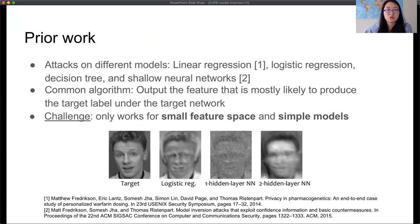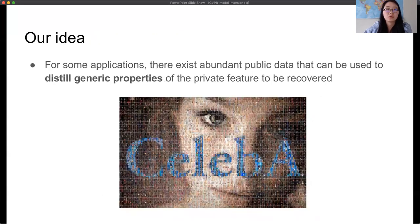Here is an illustration of reconstructed images from different models trained on the same dataset using the existing attack algorithm. You can see that even for shallow networks, the reconstruction is not realistic and fails to recover any private features of the target identity. The question we ask in this paper is: can we invert a high-resolution image from a deep neural network?